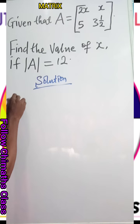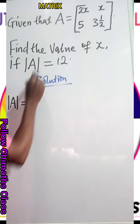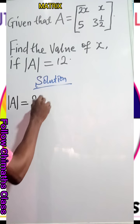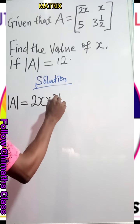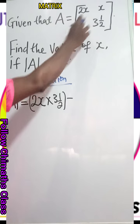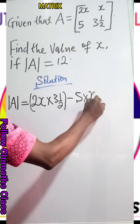So we have determinant of A equals 2X multiplied by 3 and 1/2, minus the lagging diagonal, 5 multiplied by X.